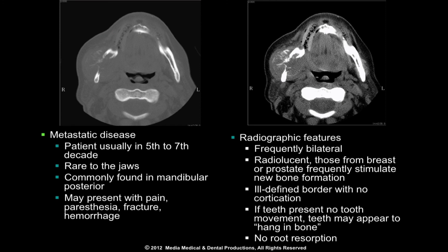In most cases of a known primary lesion, the diagnosis of metastasis is relatively easy. Metastatic disease may be confused with multiple myeloma and primary oral cancer that has invaded bone. However, the borders of multiple myeloma lesions are generally more well-defined and invasion of bone by primary oral cancer can usually be differentiated by clinical examination. In the images shown, note the areas of apparent bone formation within the lesion. This lesion was ultimately diagnosed as metastatic from the prostate.